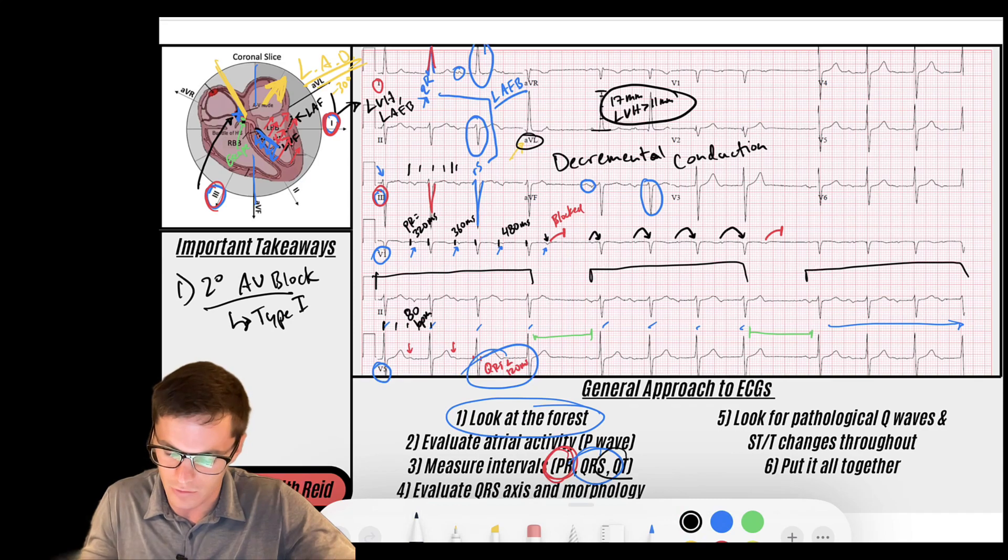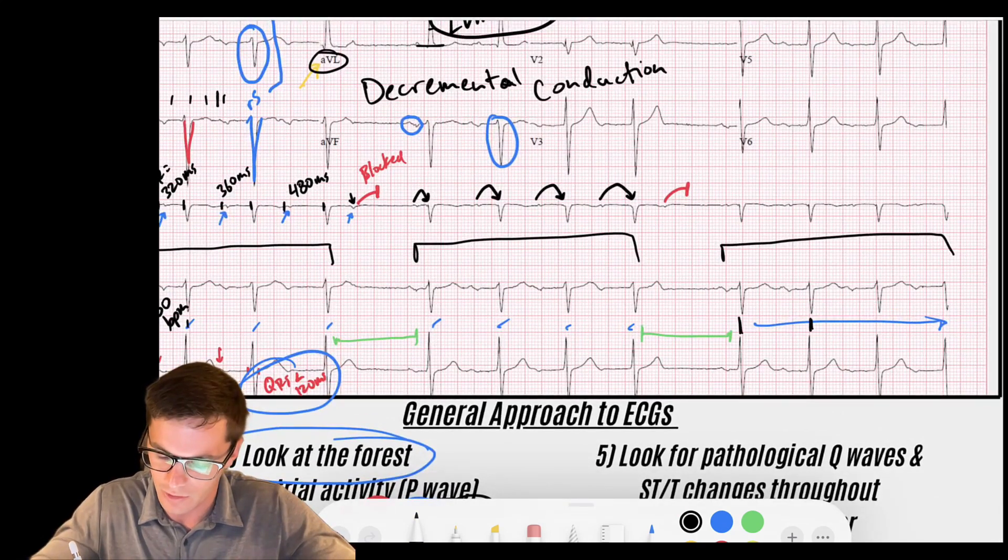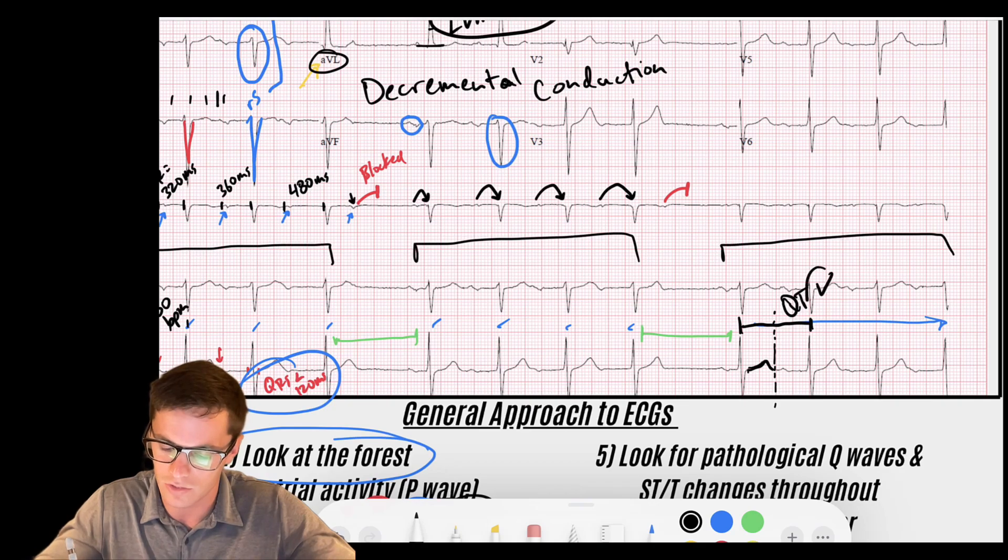Let's take a look at the QT interval. I'll just go between two of these R to R's. I'll go midway, and I'll see if my T wave ends at least by the midway point, which it does. So my QT looks good.